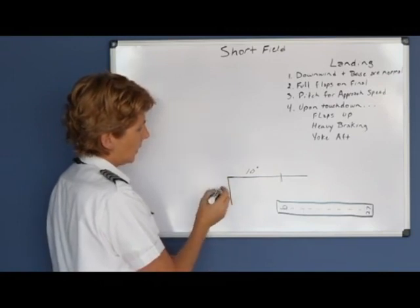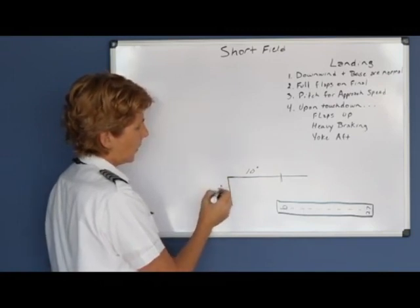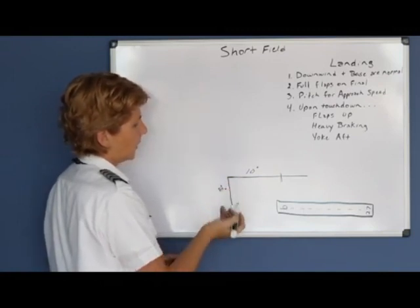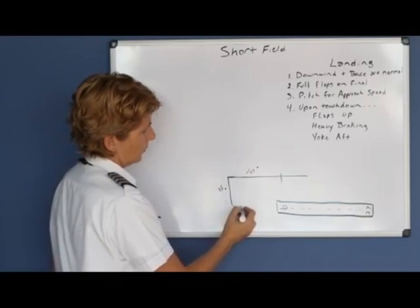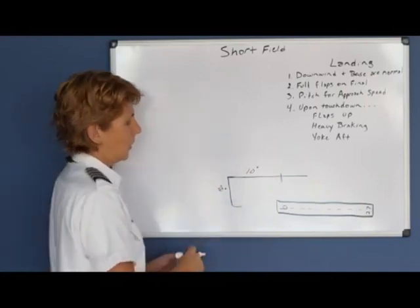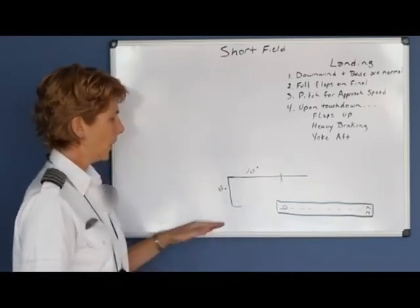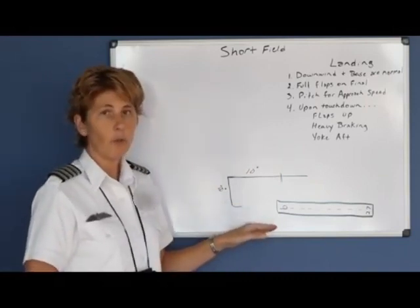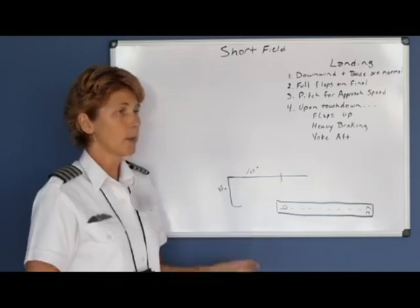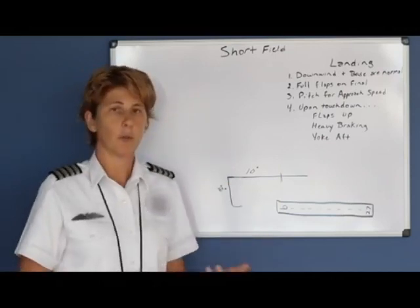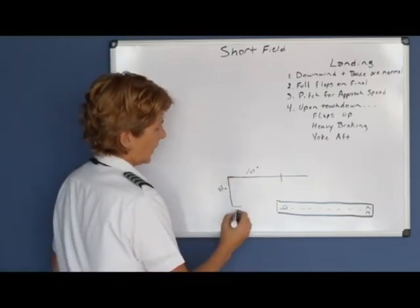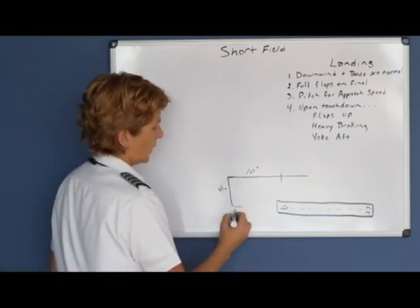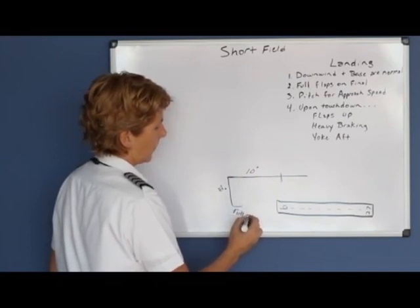When you turn base, normally you would go ahead and put your 20 degrees of flaps in. Then as you turn final, on a normal landing we don't configure full flaps until we're absolutely assured that the runway is made. But in the short field landing technique, we want to go full flaps as soon as you turn final.